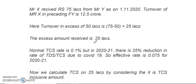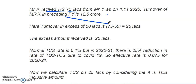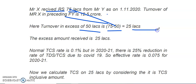For example, Mr. X received 75 lakhs from Mr. Y as on 1st November 2020. The turnover of Mr. X in the preceding financial year is 12.5 crore. Here, the excess amount over 50 lakhs is 75 minus 50 lakhs, so the excess amount is 25 lakhs. On this 25 lakhs, TCS is applicable.